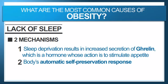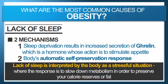The second mechanism has to do with your body's automatic self-preservation response. Lack of sleep is actually interpreted by the body as a stressful situation. And whenever your body goes through stress, the response is to slow down the metabolism in order to preserve calorie reserves or fat. For example, in the old caveman days, if a lion is running after you, that's stressful. But your body actually slows down the metabolism so that if you're running and food isn't readily available, whatever your body has as stored energy — usually fat — gets protected and the metabolism slows down.